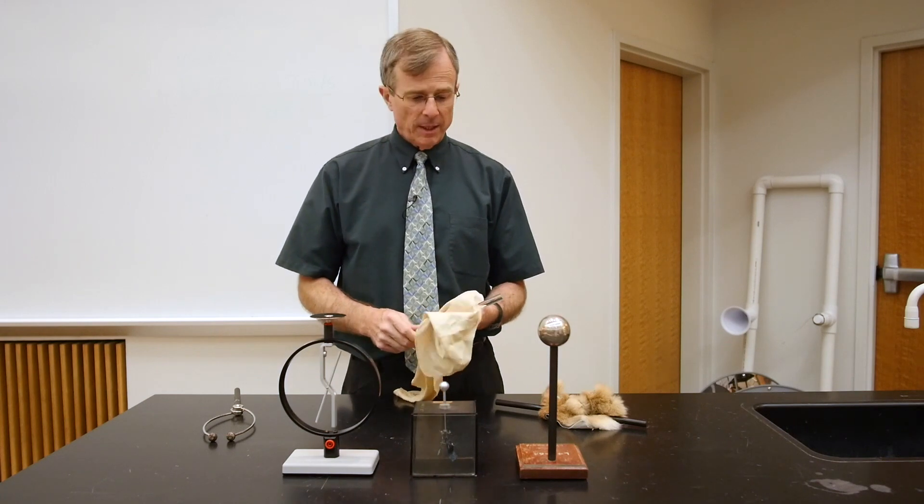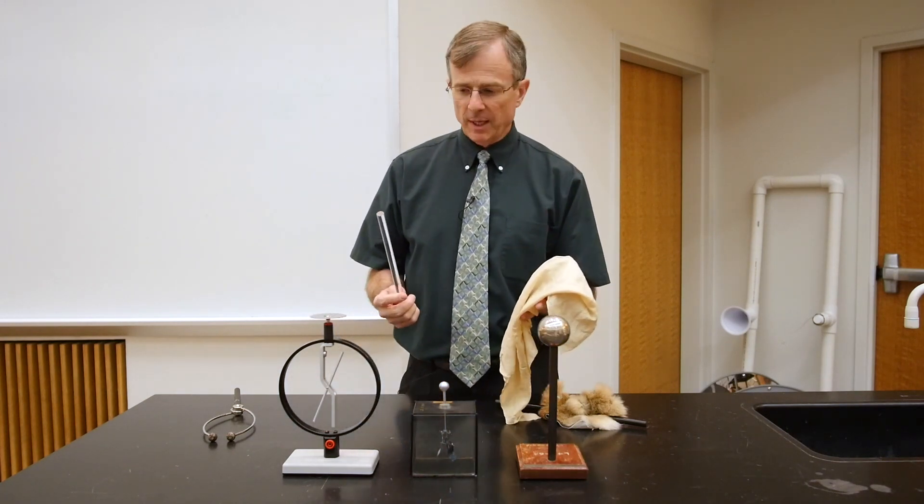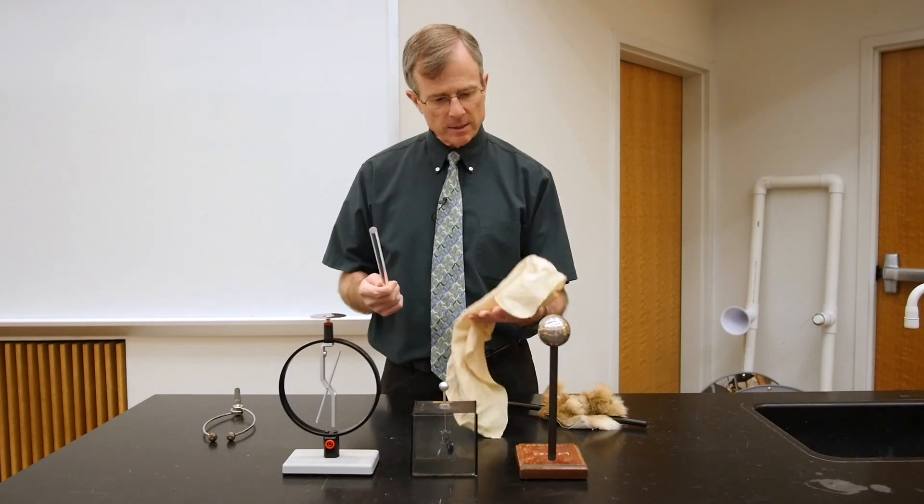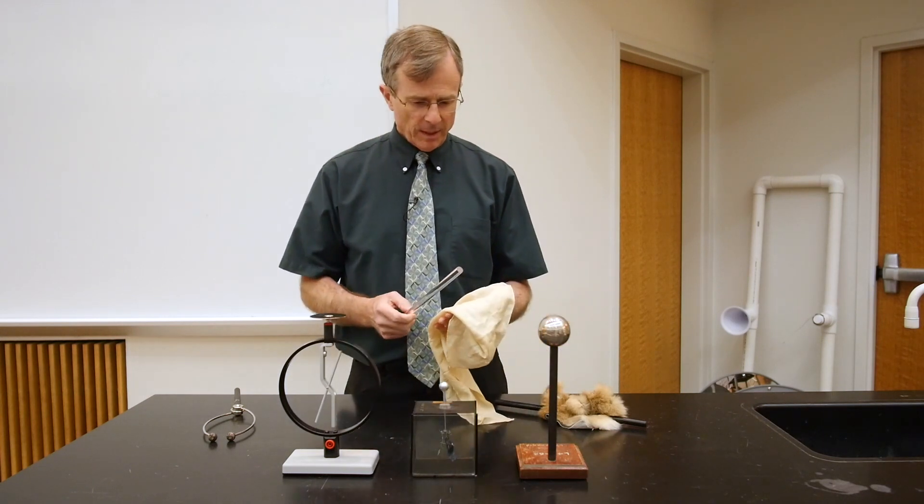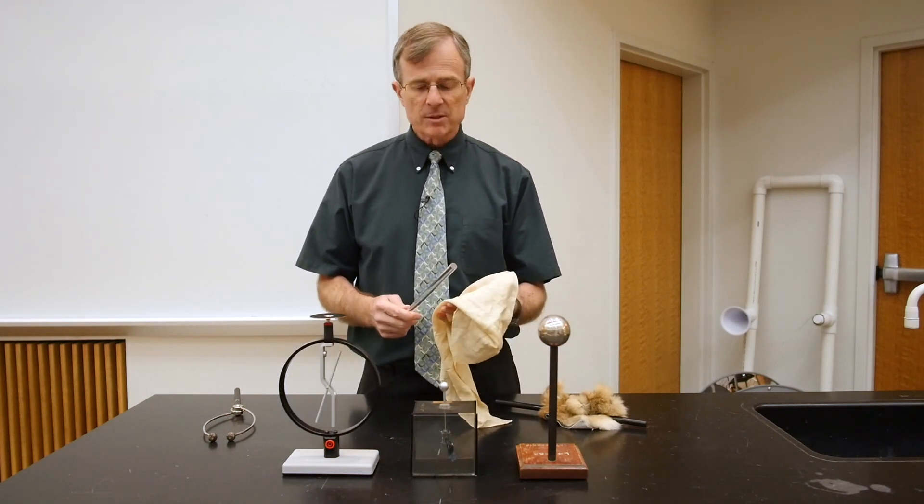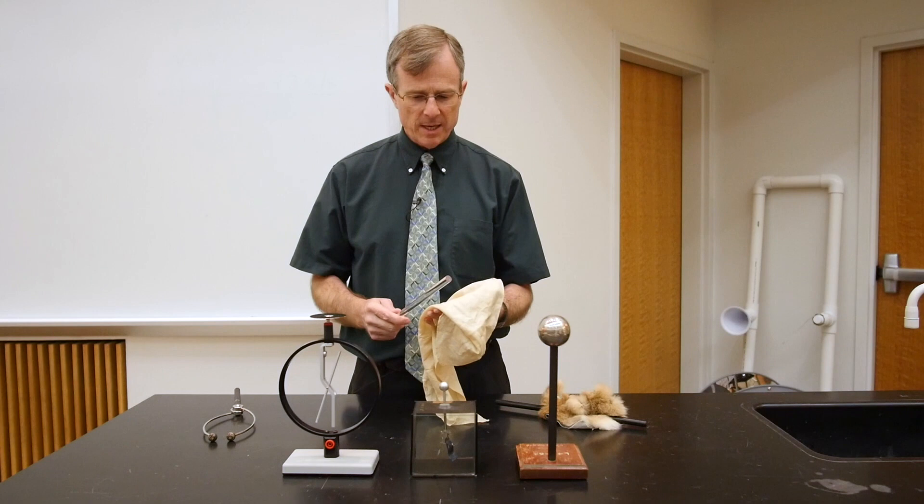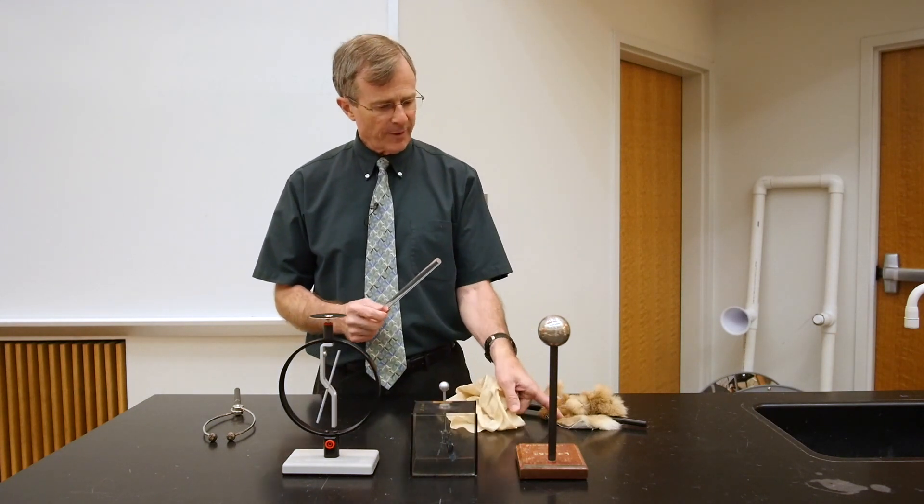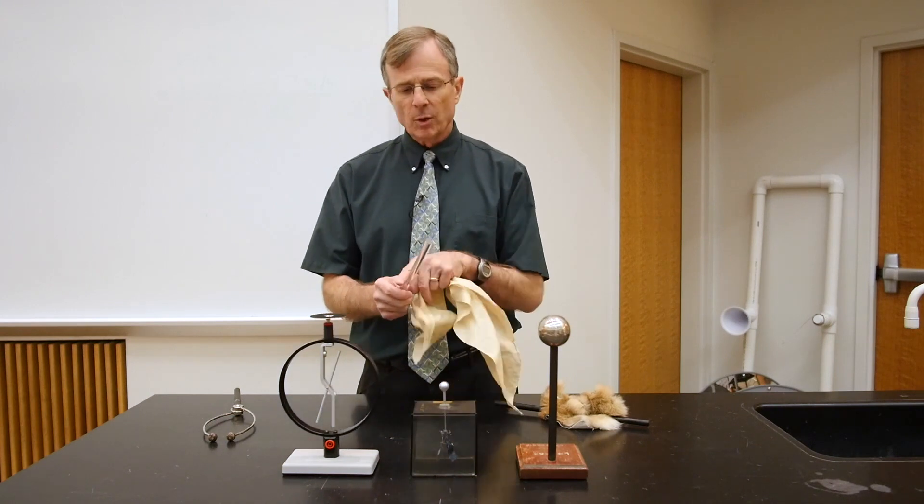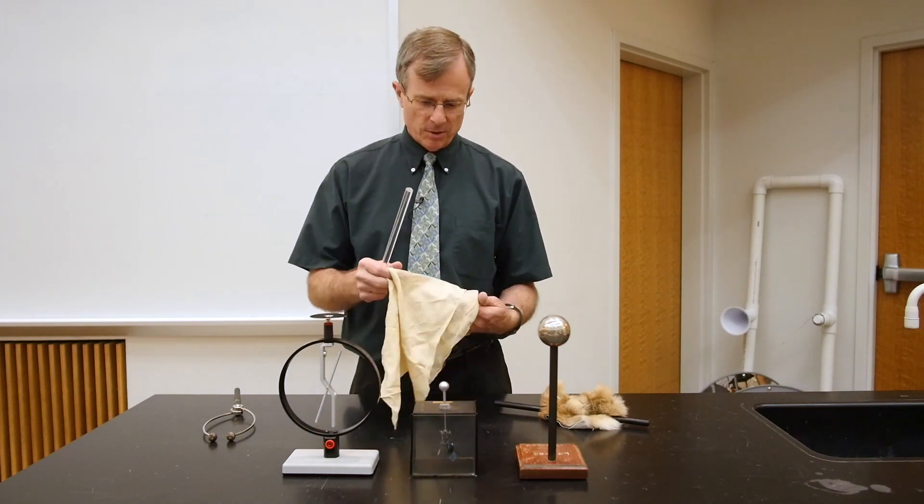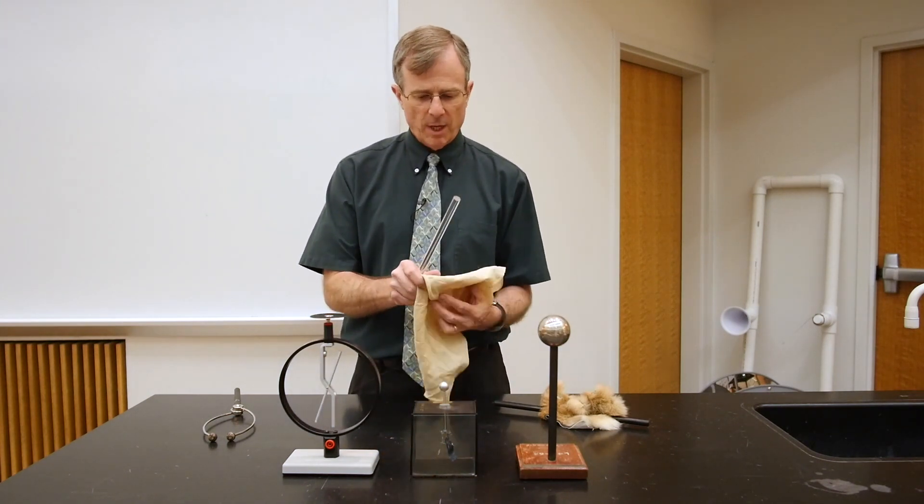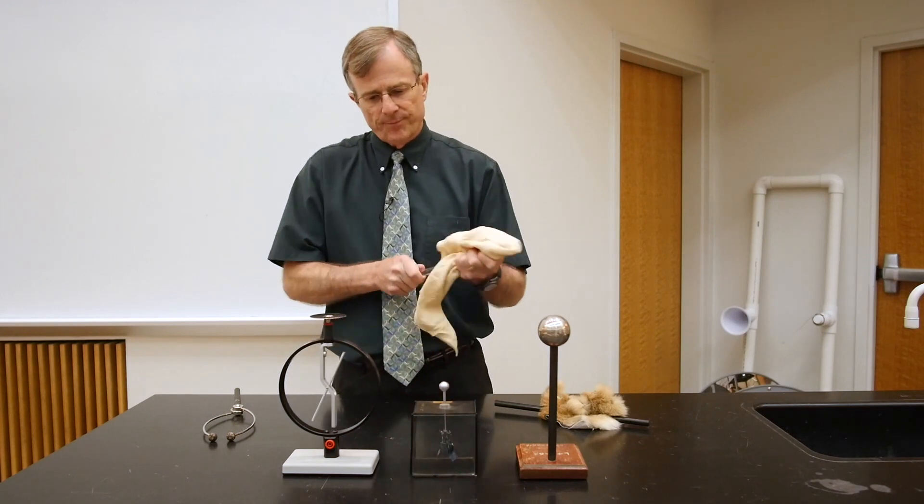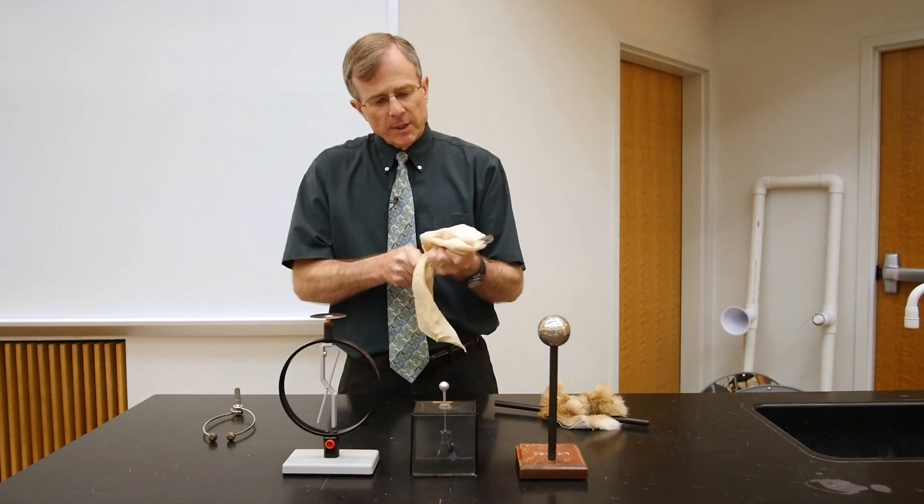We can do a similar thing with a piece of lucite and a piece of silk. And the opposite happens with this particular case, the electrons, instead of going from the fabric to the rod, go from the rod to the fabric. So this lucite rod loses electrons, which go into the silk.